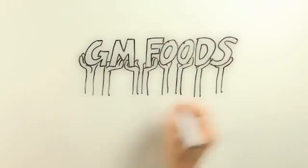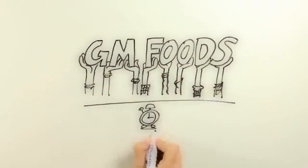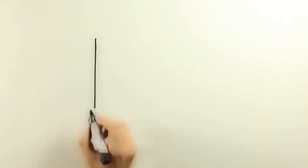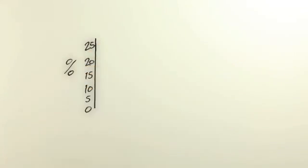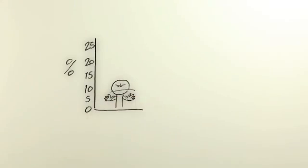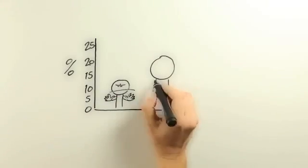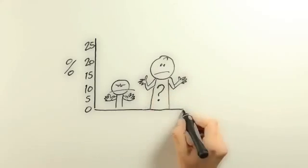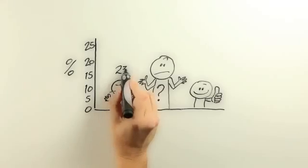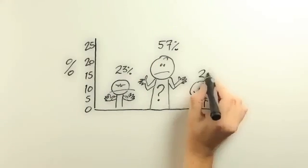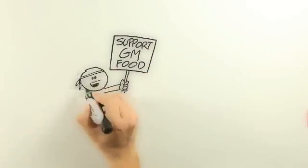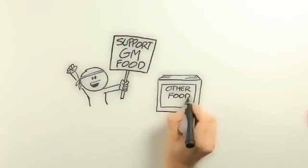Rather than ask a simple yes or no question, we can look at degrees of support or rejection, which is more in line with the breadth of attitudes that exist. Generally, we can say a small amount of people are either extremely positive or negative towards GM foods, while the bulk of the population is mixed or slightly positive.